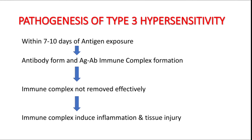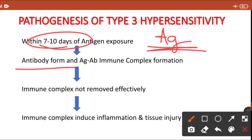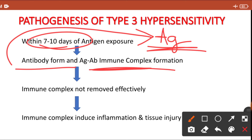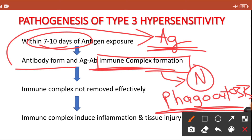Now the pathogenesis of type 3 hypersensitivity: first the patient will have antigenic exposure — exogenous or endogenous. Following antigen exposure, within 7 to 10 days the patient will develop antibody; the B cell gets stimulated and forms the antibody. This antibody will combine with antigen and form an immune complex. Such immune complex formation also occurs after microbial infection and is effectively removed in a normal person in the liver and spleen by phagocytosis.